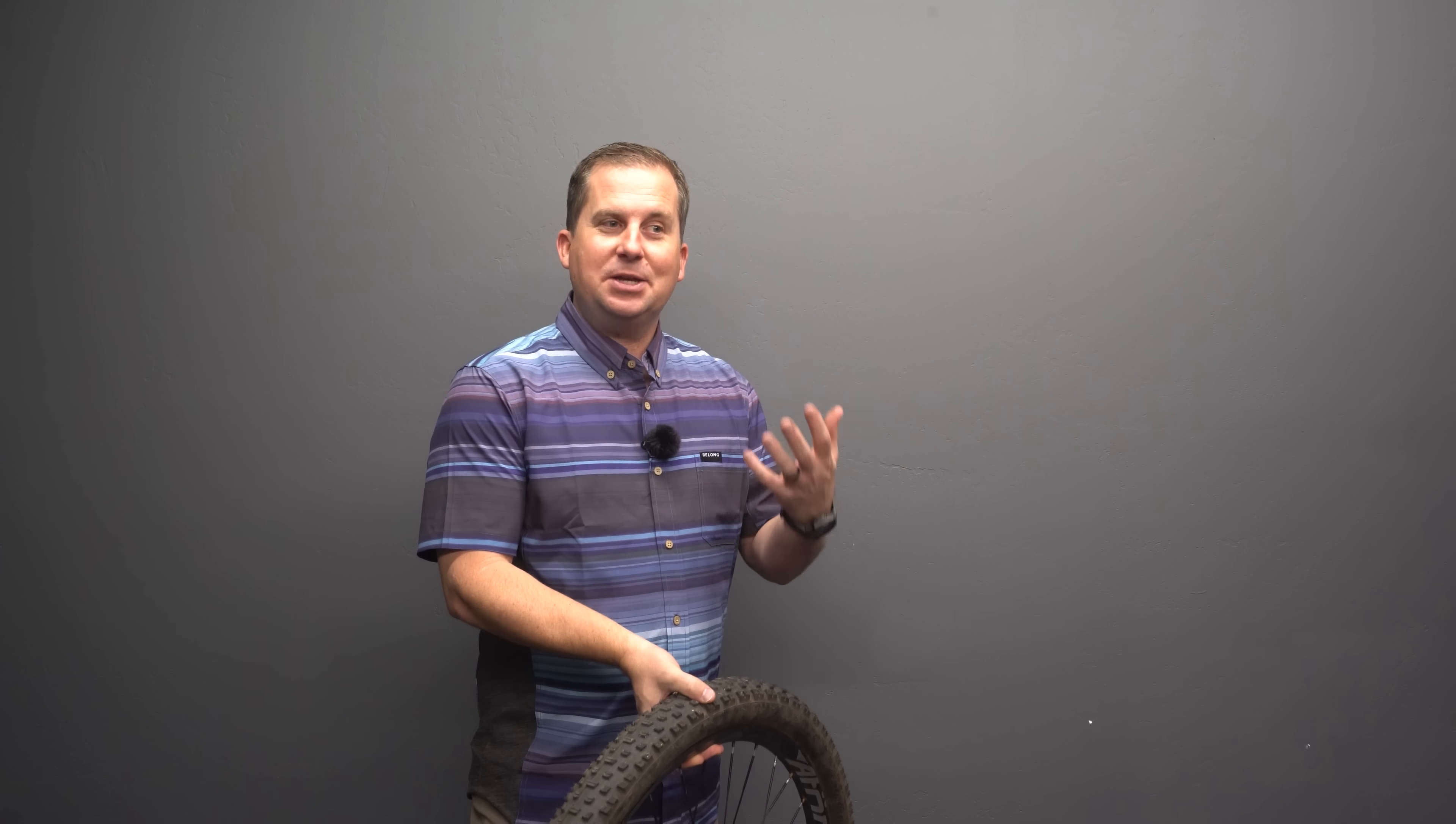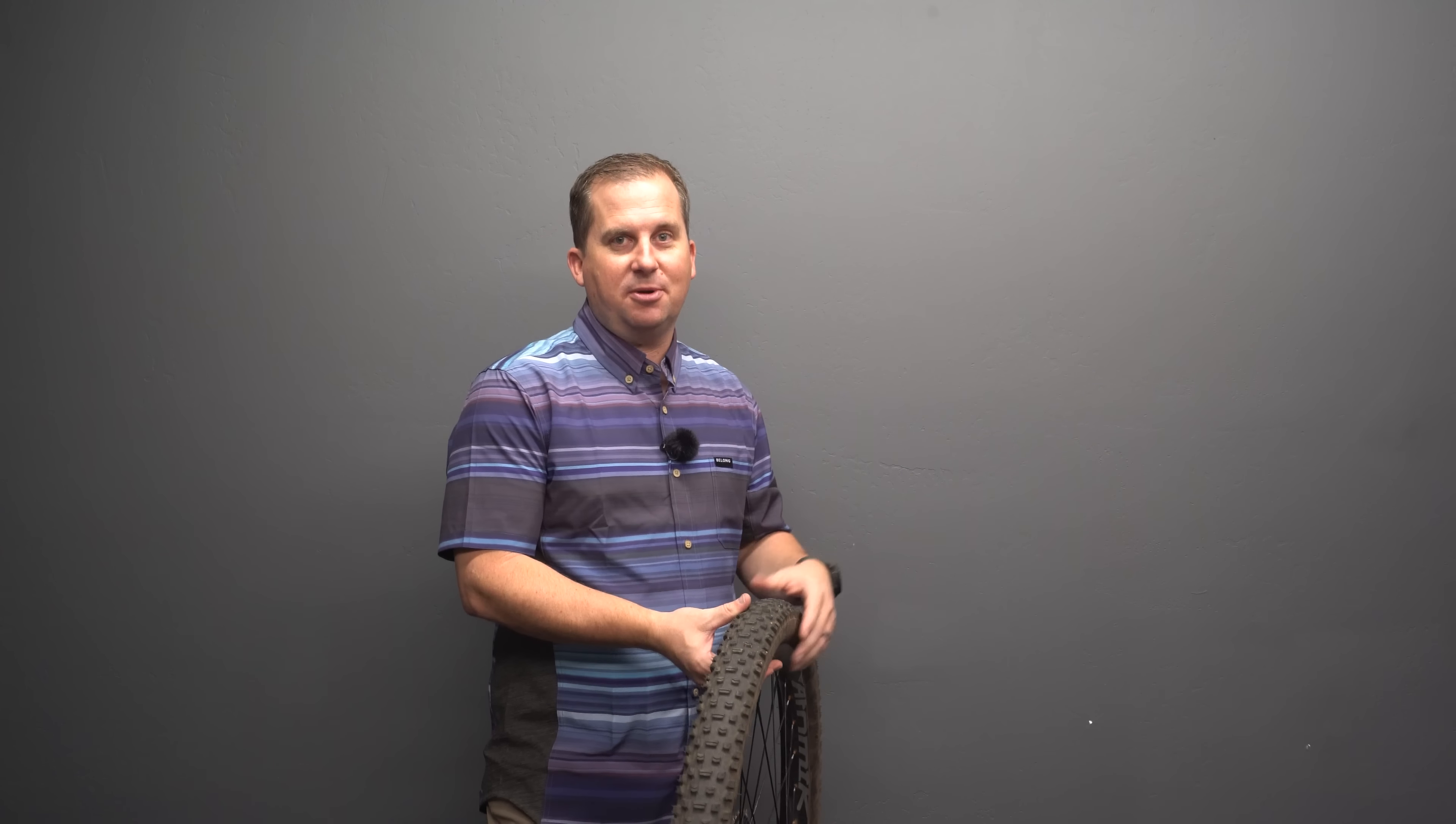The right tire for your terrain and grip requirements is probably the biggest difference you can make to a bike. Yet most people don't experiment. Most people are running Assegai's and DHRs or DHRs and DHFs. Those are great tires for gravity and really high speeds. But a lot of people buy a hardtail, put light parts on it, and then put these super draggy, super grippy tires on and just say, man, it's so slow. It just doesn't have that pep and zip I thought it would.